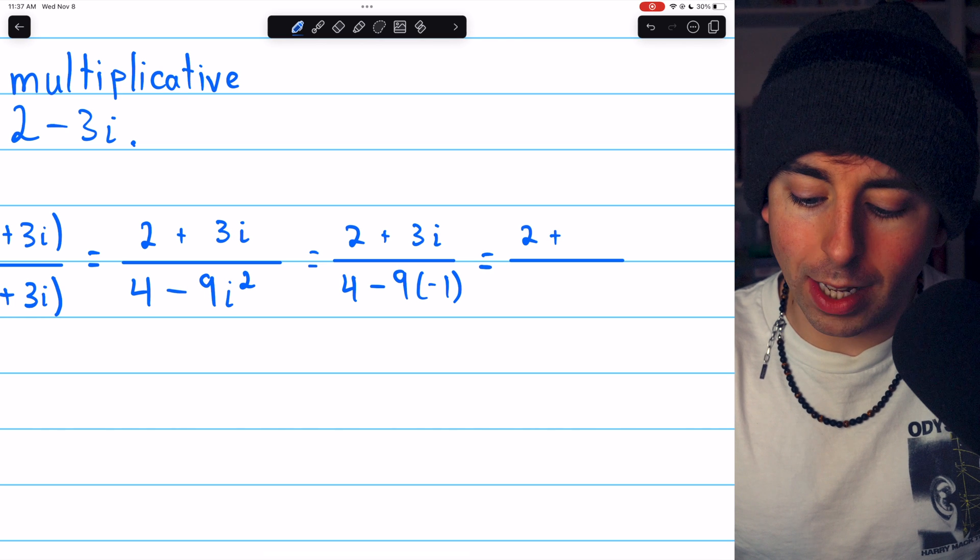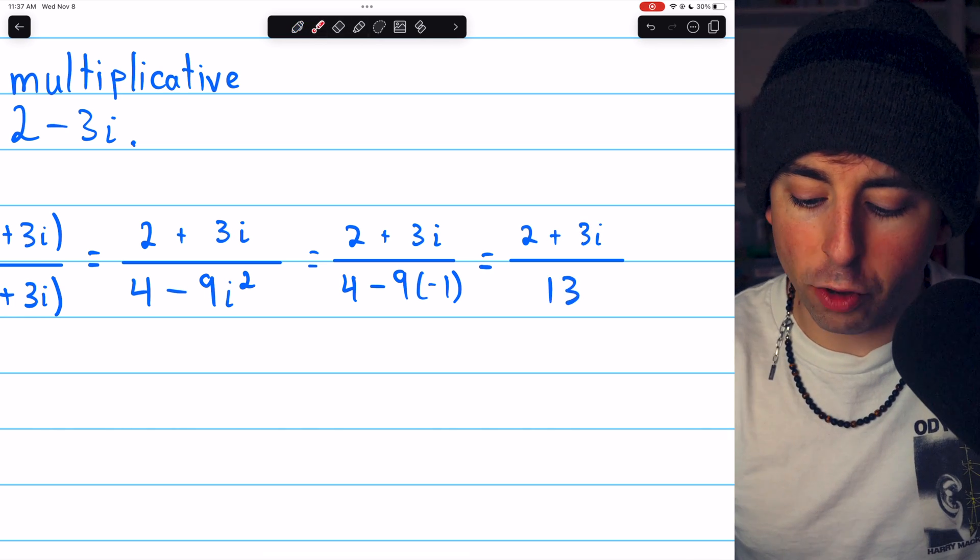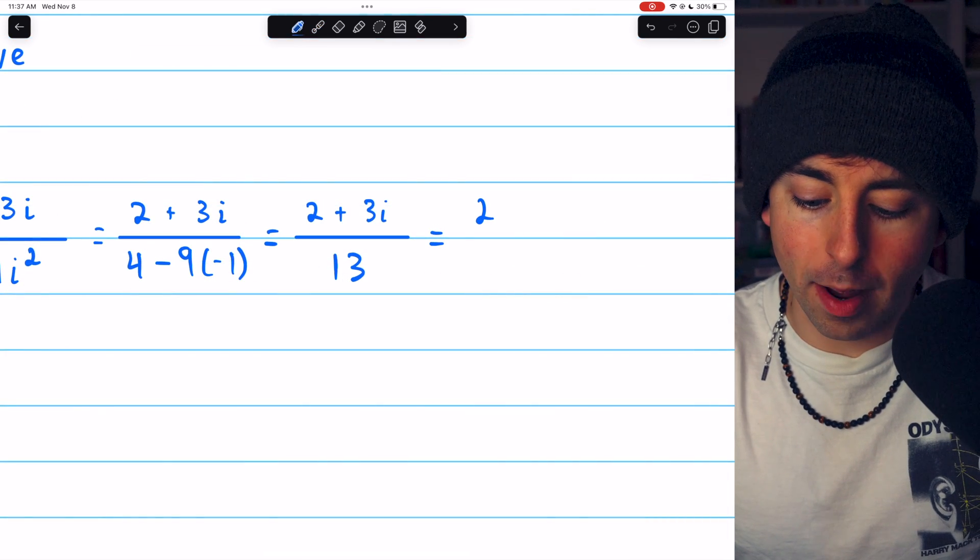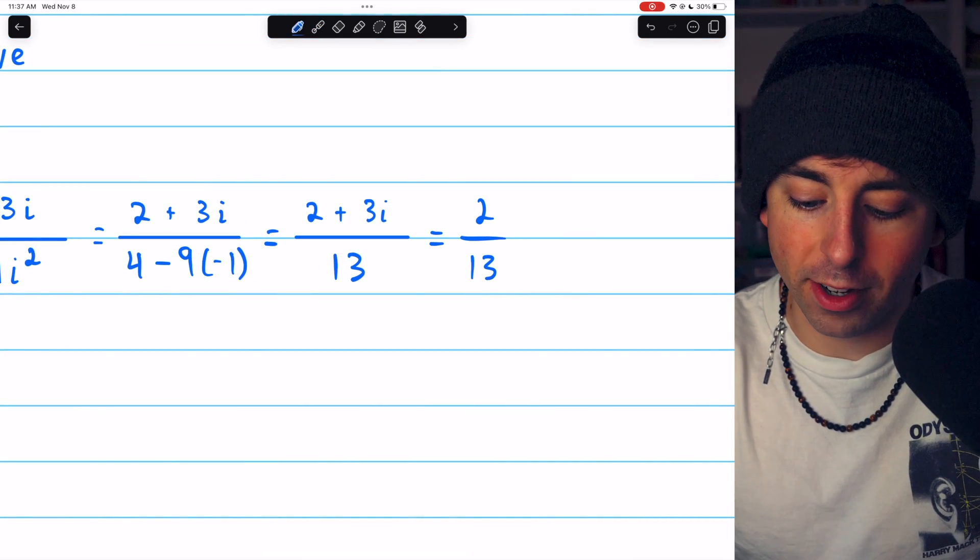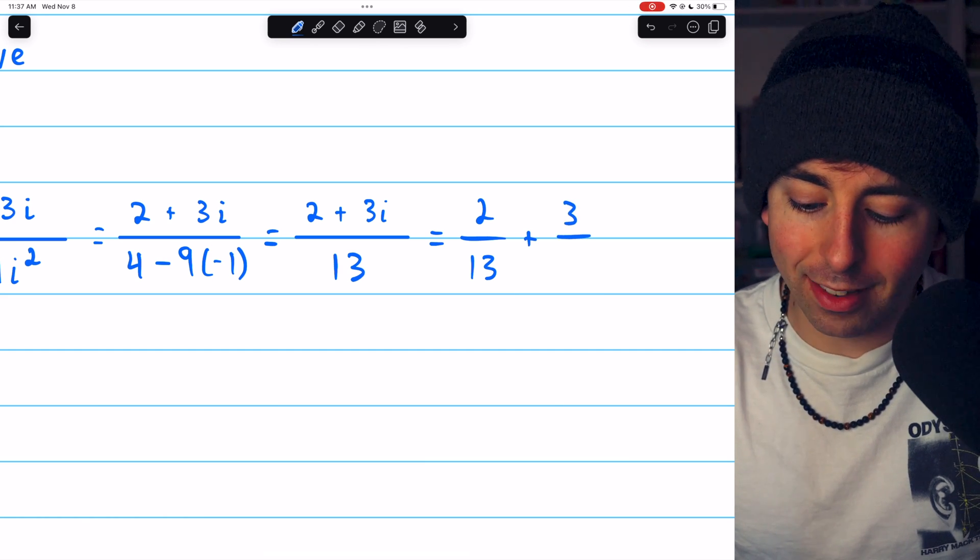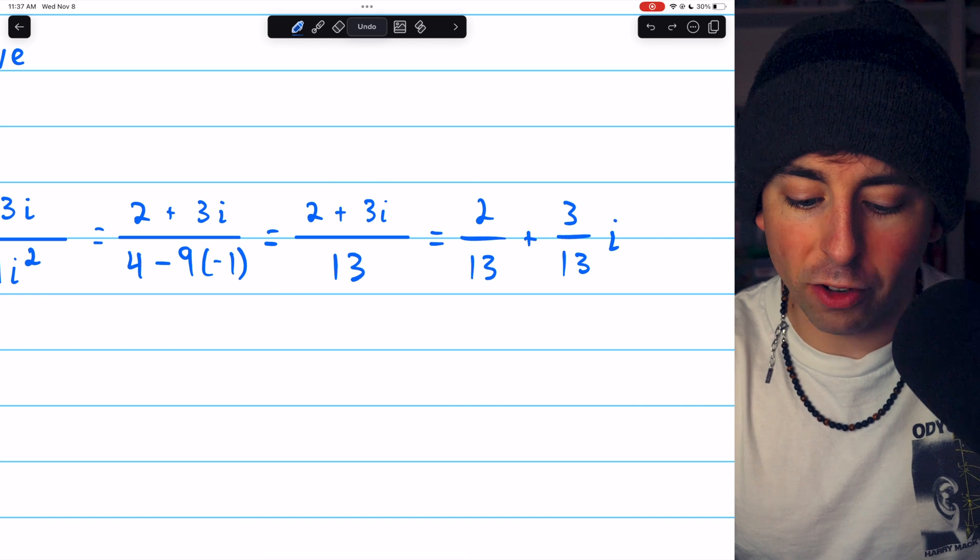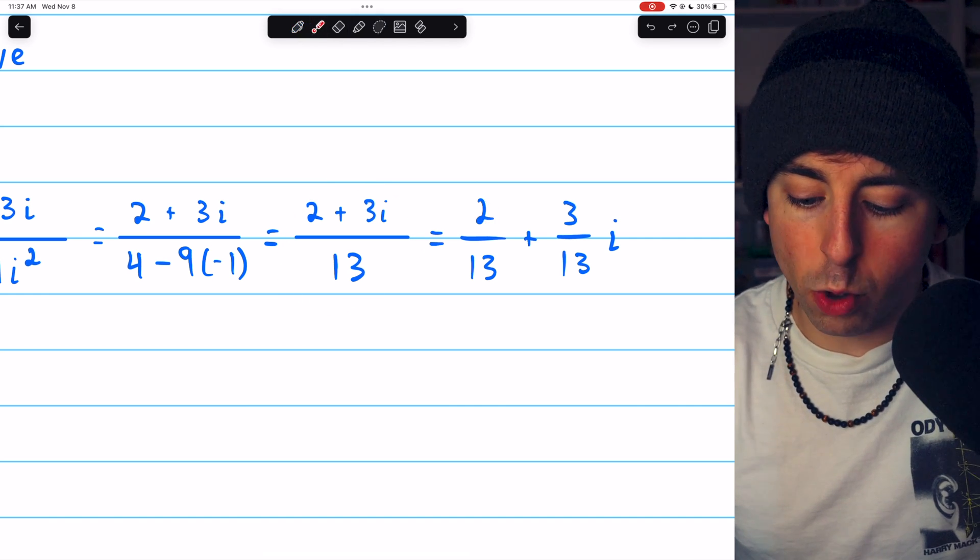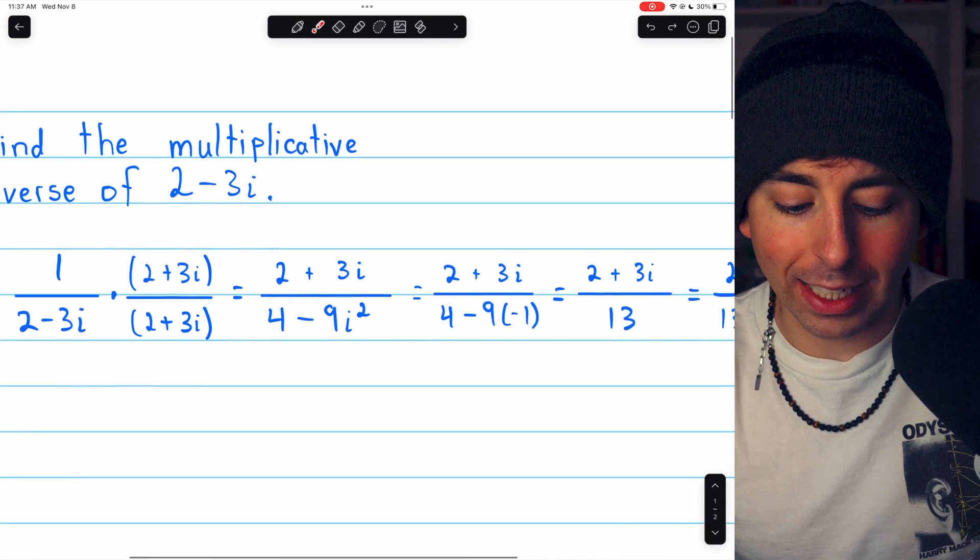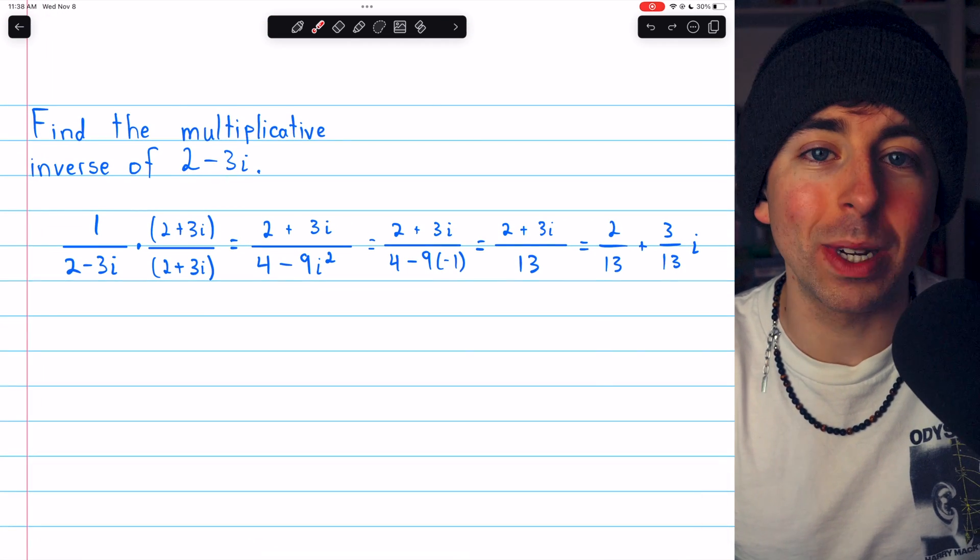Thus, we have 2 plus 3i over 13. And now we can just split the fraction up across the numerator to get standard form. The real part of this complex number is 2 over 13, and the imaginary part is 3 over 13. So just splitting up this fraction, we get our final answer, 2 over 13 plus 3 over 13i. And that is the multiplicative inverse of the complex number 2 minus 3i.